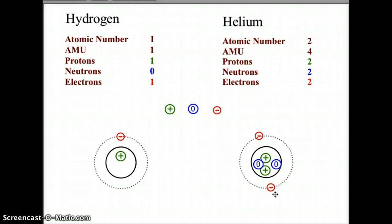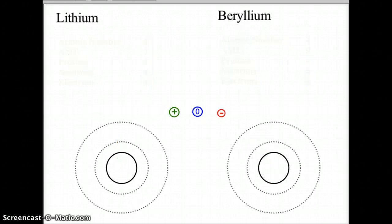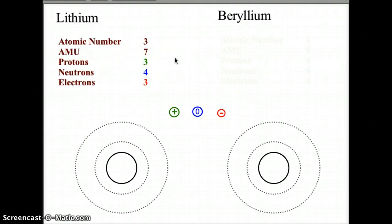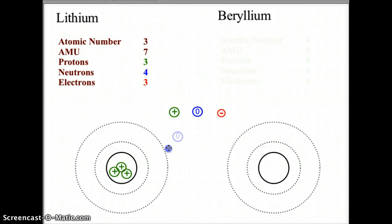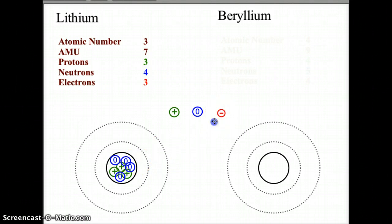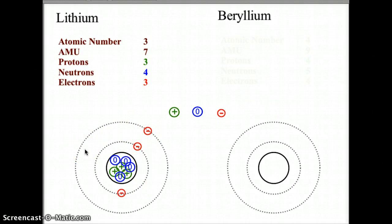So there we have hydrogen's and helium's Bohr model atoms. Now let's look at lithium. Lithium has an atomic number of three and an AMU of seven, giving it three protons and four neutrons, which we place in the nucleus — three plus four giving it a mass of seven. We also have three electrons. The first two electrons go into the first orbital level, but the third electron begins the second orbital level, since the first orbital can only hold two electrons.